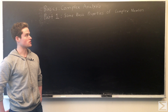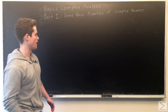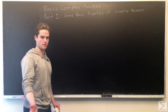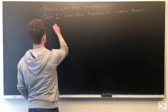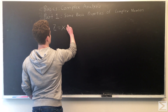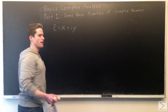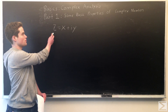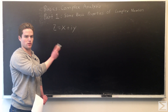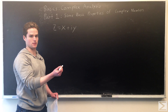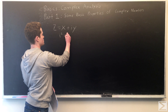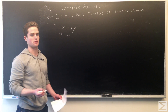Starting with some basic properties of complex numbers. A complex number is really two real numbers. We can write a complex number as x plus i times y, where x and y are both real numbers, and i is the well-known square root of negative 1, so i squared equals negative 1.